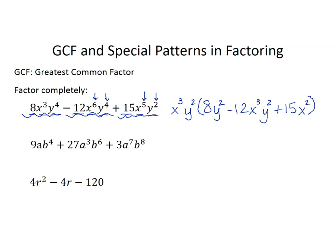Let's look at another one. Always start with the number terms, then do your variables one at a time. For the number terms — 9, 27, and 3 — they can all be divided evenly by 3, so we'll take a 3 out. For the letter terms, we have a to the first, a cubed, and a to the seventh — they all have at least one a. And for b, we have b to the fourth, b to the sixth, and b to the eighth — they all have at least b to the fourth, so we'll factor that out.